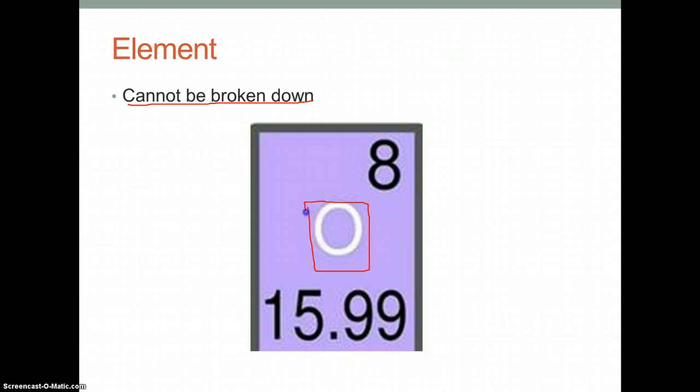Using the periodic table, we can see that this is the atomic number, which describes the number of protons. Mass equals protons plus neutrons. Protons are the subatomic particles that classify what the element is. This is how the periodic table works.